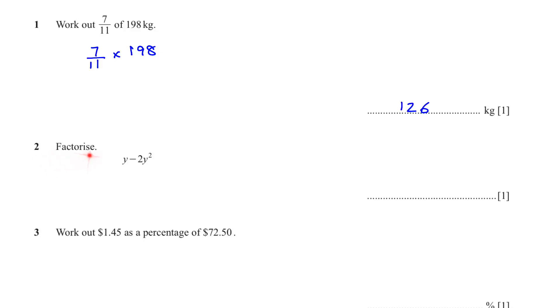Next question, factorize. What is common here? Factorize means you remove the common out. If you expand this bracket you will get y minus 2y. Y square means 2y. So this y is common in this equation. So we remove the y out and we'll be left with 1 minus 2y.